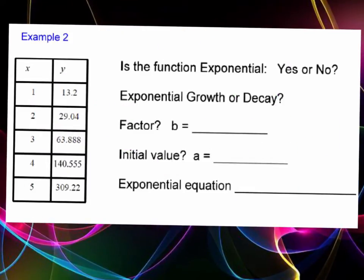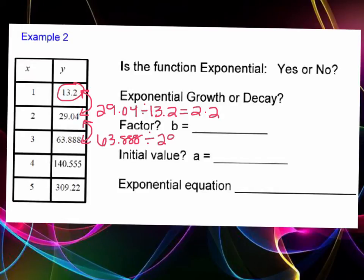Here is our example two. We need to divide the values to figure out if this is exponential. You're not adding the same number, instead you need to divide. Take 29.04 and divide by 13.2 and we get 2.2. We can do the same with 63.888 divided by 29.04, which also gives 2.2. So 2.2 is our growth factor. Yes, this is exponential and this is our growth factor.